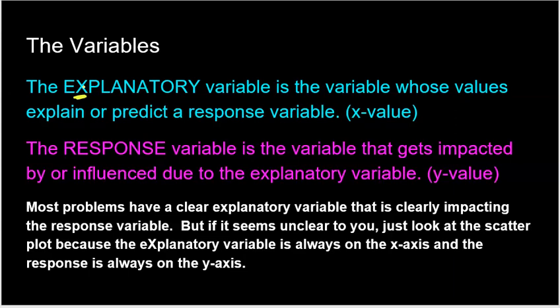Now, the response variable is the variable that gets impacted by or influenced due to the explanatory variable. So when you're reading the problem, you want to identify, what variable do I think is impacting the other variable, right? And the one that's doing the impacting, the one that's doing the explaining, that's the explanatory variable. It explains the response, right? So if we think of the point X comma Y here, the X variable explains the Y variable, and the Y variable is responding to that X variable.